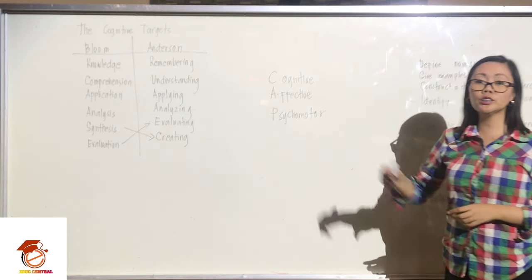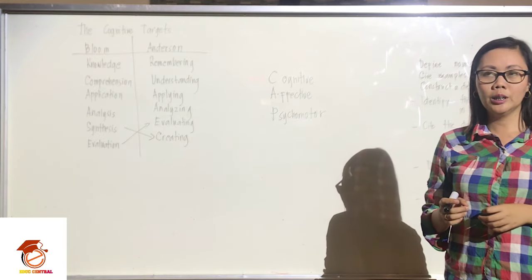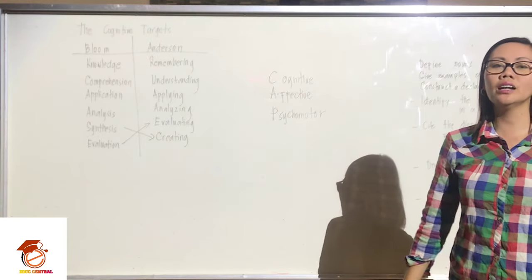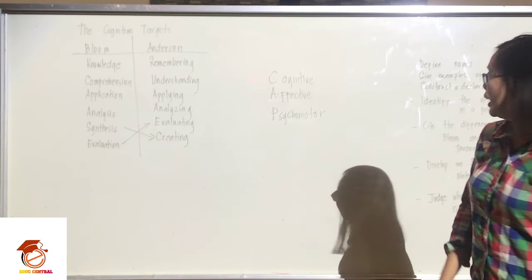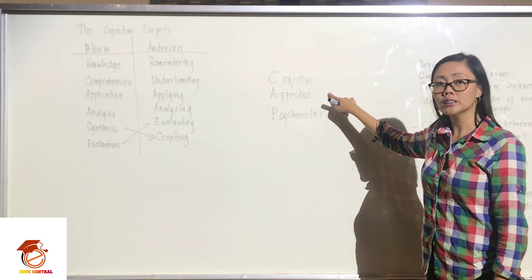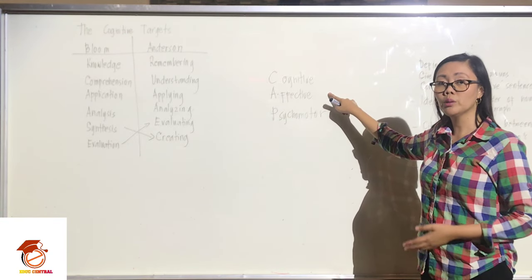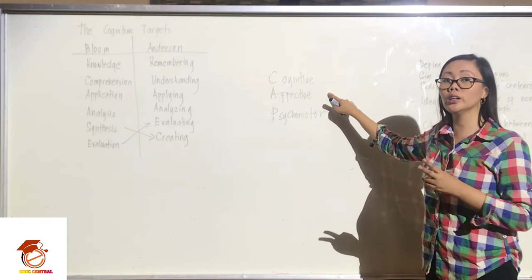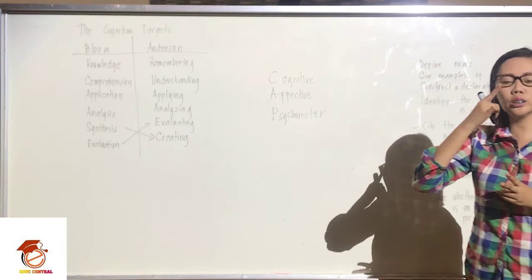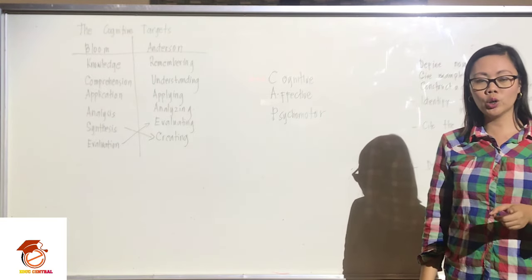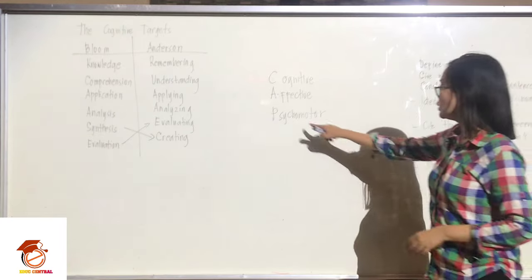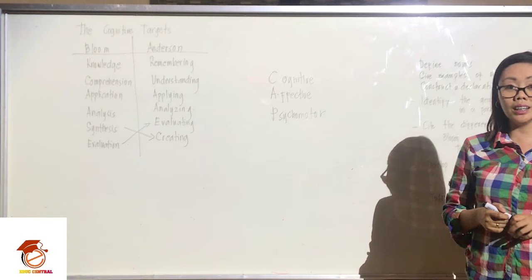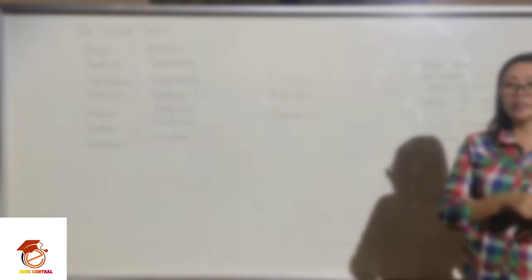Cognitive targets refer to those goals developing the mental processes of our students. The affective target covers targets referring to the values, motivation, character, and attitude of students — the two focal concepts being motivation and attitude. The last domain is psychomotor, which is for the enhancement of student skills — thinking skills or manipulative skills.